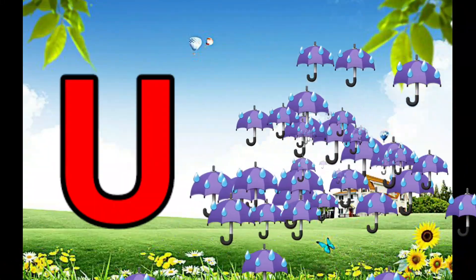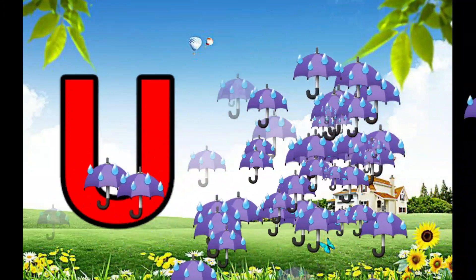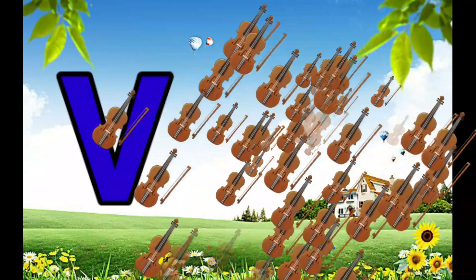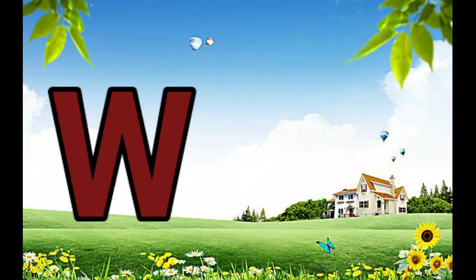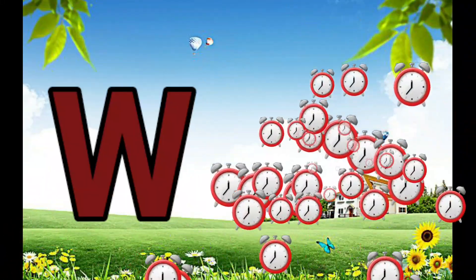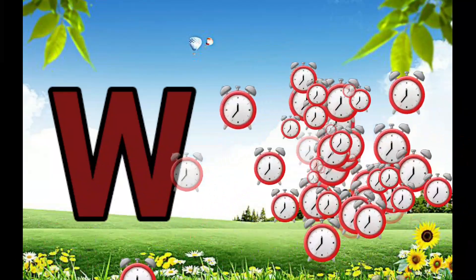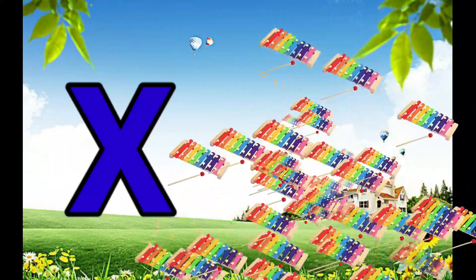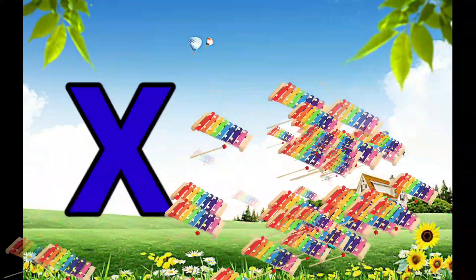U is for Umbrella, uh-uh-Umbrella. V is for Violin, V-V-Violin. W is for Watch, W-W-Watch. X is for Xylophone, Z-Z-Xylophone.